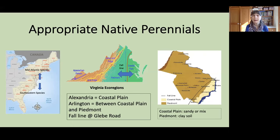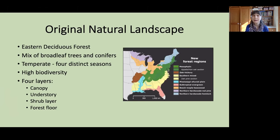Just looking here locally, Alexandria is in the Coastal Plain and tends to have soils that are sandy or a mix of types, while the Piedmont tends to have clay soil. The original natural landscape for this region was the Eastern Deciduous Forest — a mix of broadleaf trees such as oaks, maples, and birches, mixed in with some conifers. In our Temperate region, we have four distinct seasons, a high level of biodiversity, and four forest layers: the canopy, the understory, the shrub layer, and the forest floor.